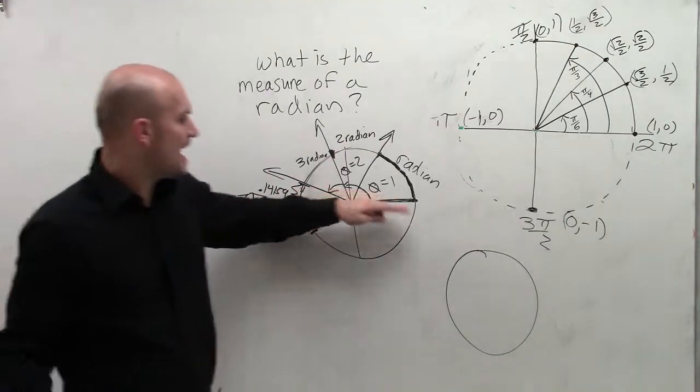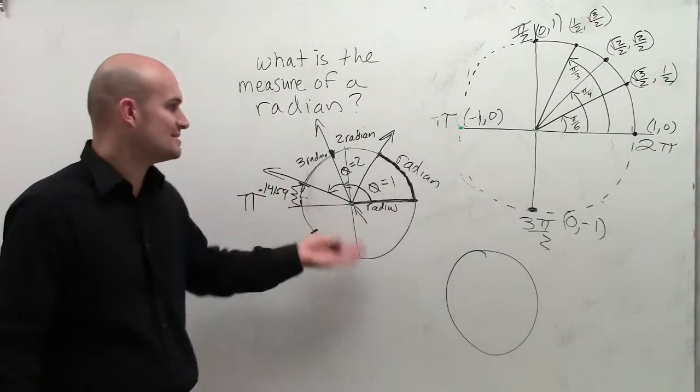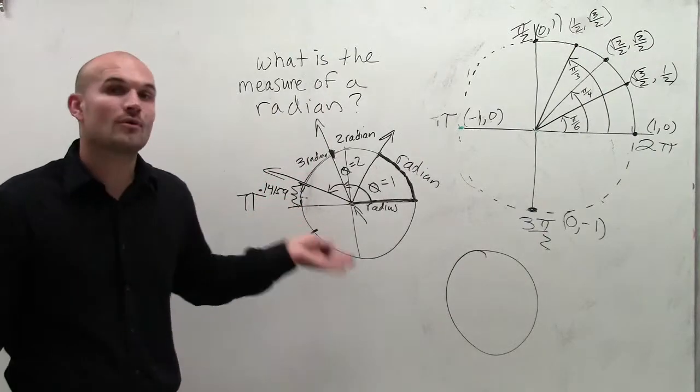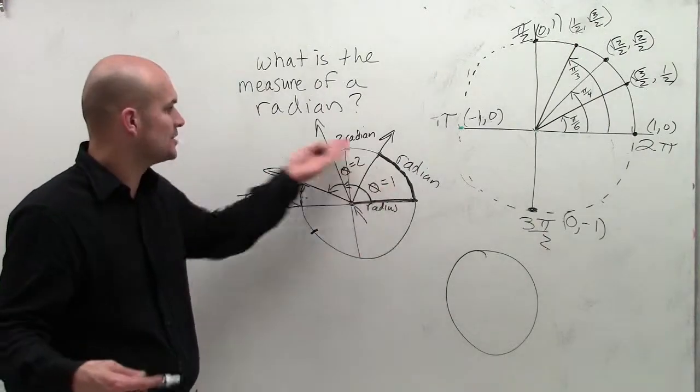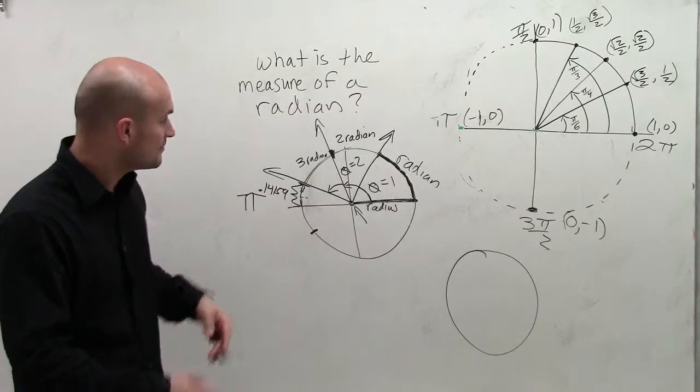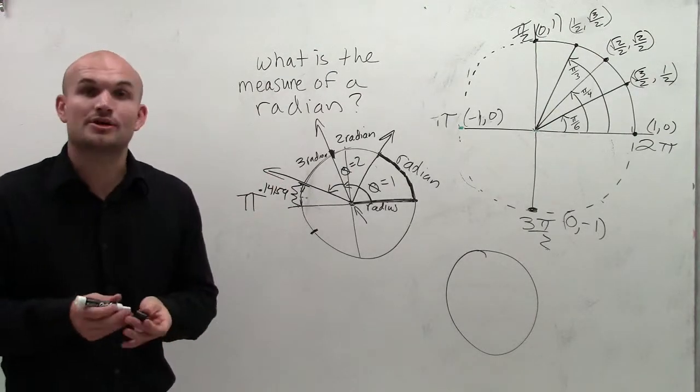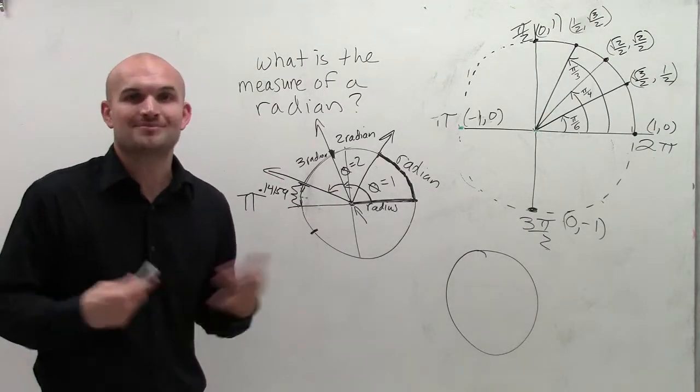So halfway around a circle is pi radians. It means it takes 3.14159 dot, dot, dot radians to go halfway around a circle. So that exactly is what your measure of a radian is. I hope that helped. Thanks.